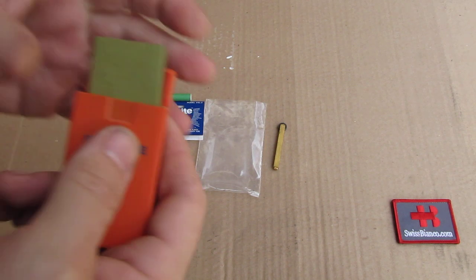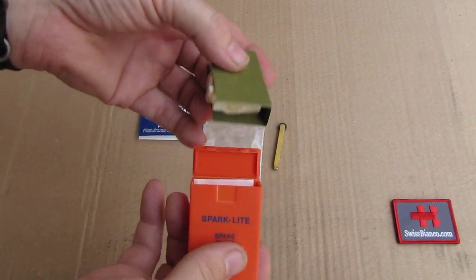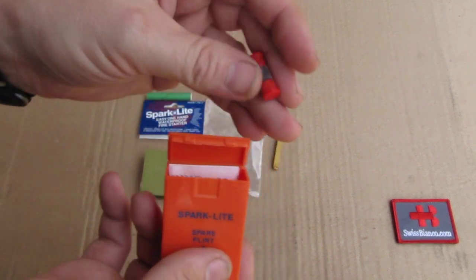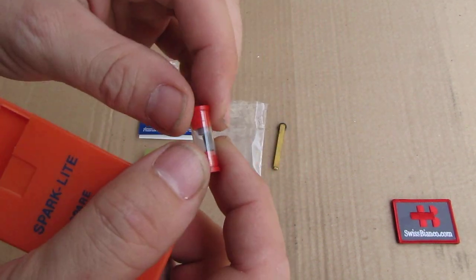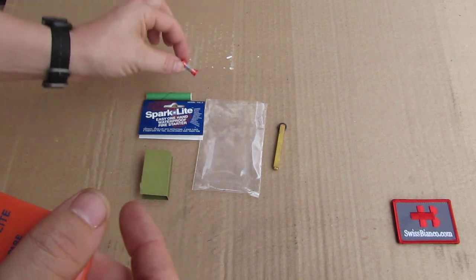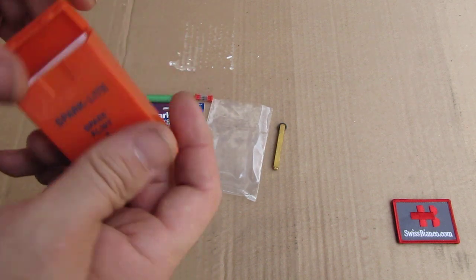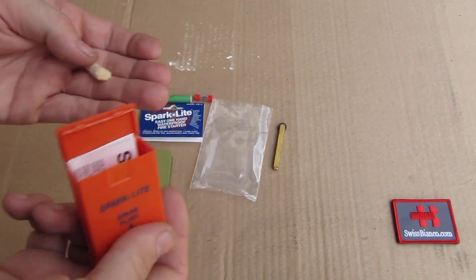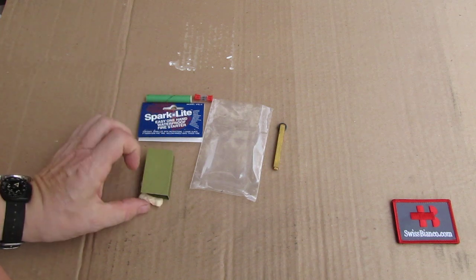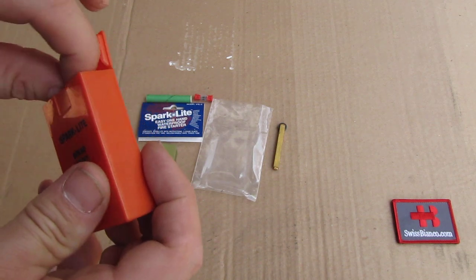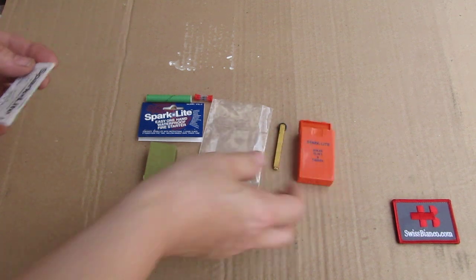We have here the divider, some spare flints, another tinder that did fall out and we have the manual. Now the thing is empty.